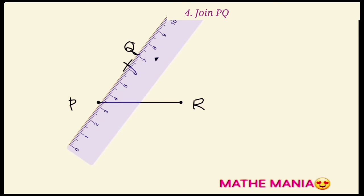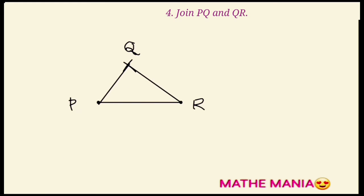Using a scale, join points P, Q and QR. This completes the upper triangle.